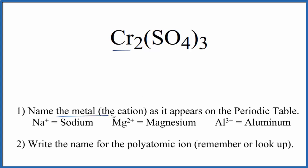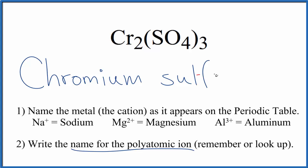First, we write the name of the metal as it appears on the periodic table. So for Cr, that's chromium. Next, we'll write the name for the polyatomic ion. So you either remember that SO₄, that's the sulfate ion, or if you're allowed, you look it up on a table of polyatomic ions. So far, we have chromium sulfate is the name for Cr₂(SO₄)₃.